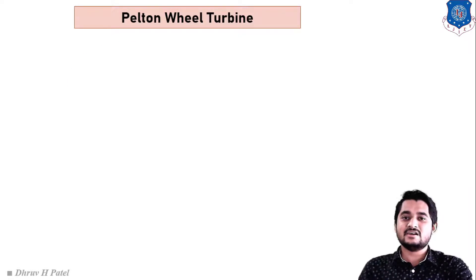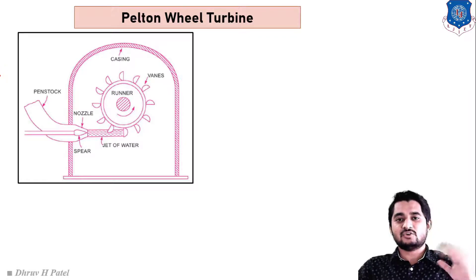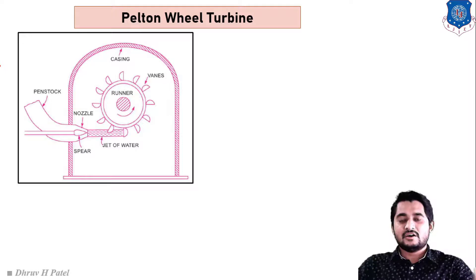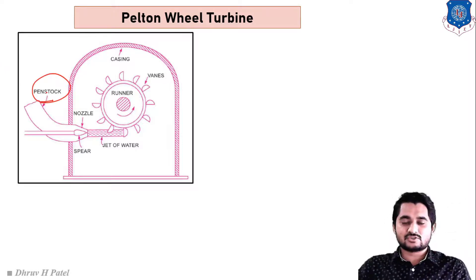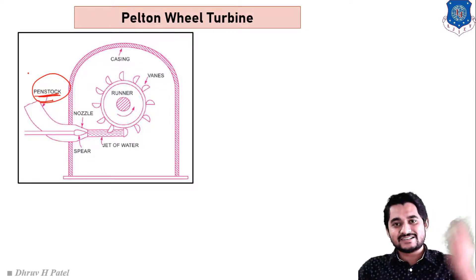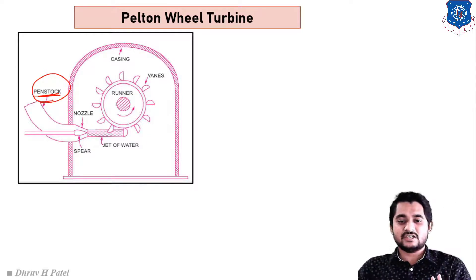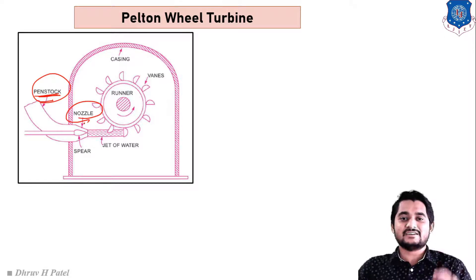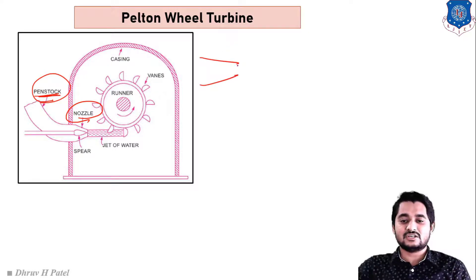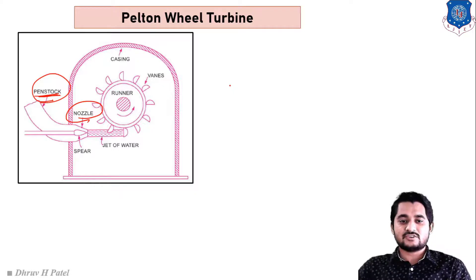The Pelton wheel turbine uses water as input and we get energy as output. At some height, water is stored at some level with the use of a dam. From the dam, water comes through the penstock — a large diameter pipe used to transfer water from the dam to the turbine inlet. A nozzle is attached at the entrance of the penstock; because area is minimum at the nozzle, velocity is maximum, giving kinetic energy at the turbine inlet.